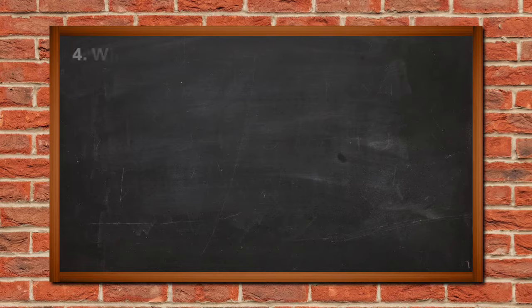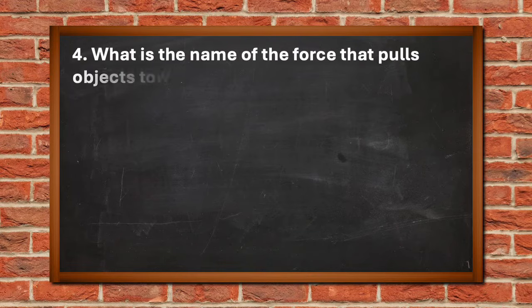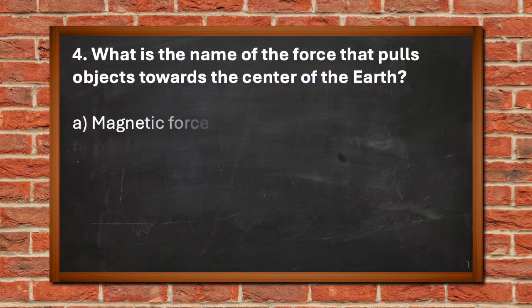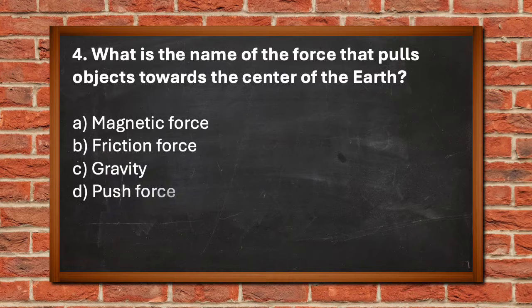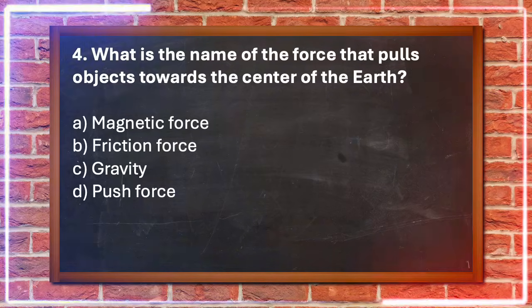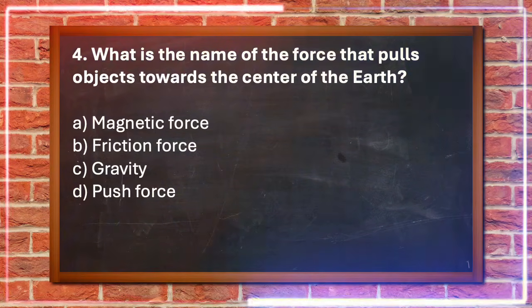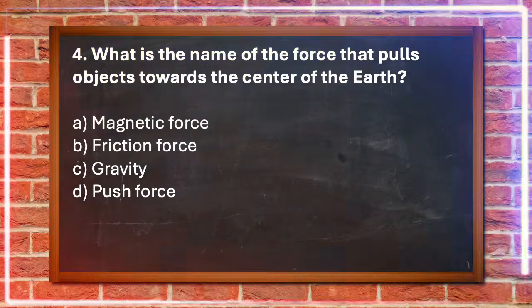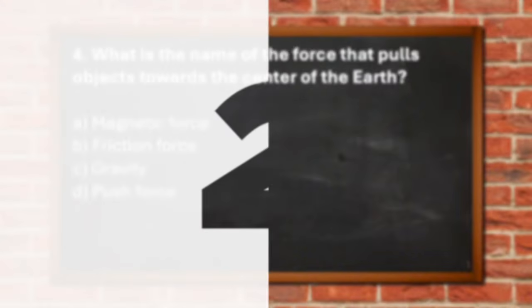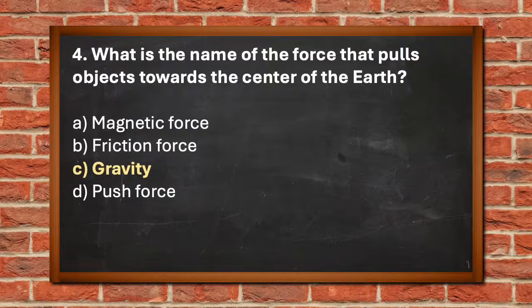Number 4. What is the name of the force that pulls objects towards the center of the earth? A. Magnetic force, B. Friction force, C. Gravity, D. Push force. The answer is C. Gravity.